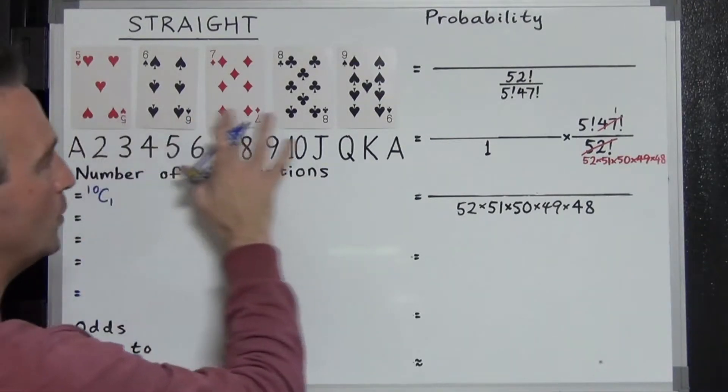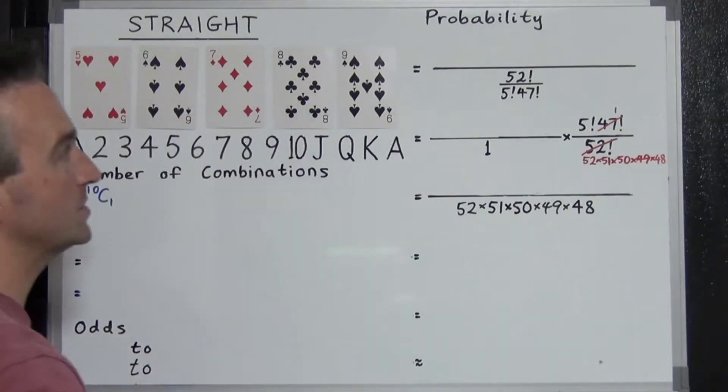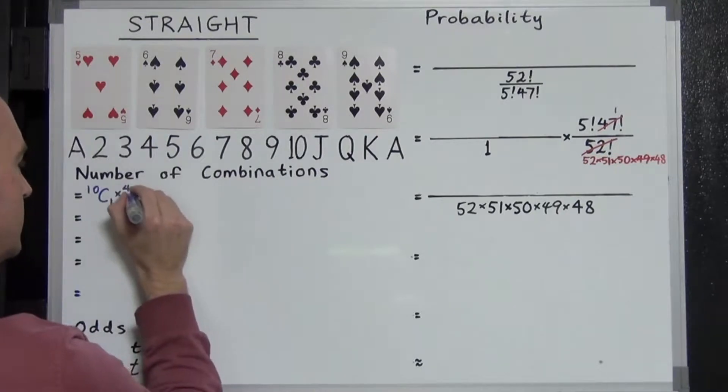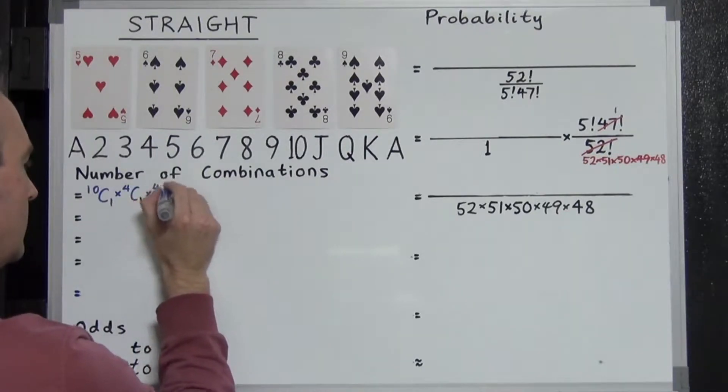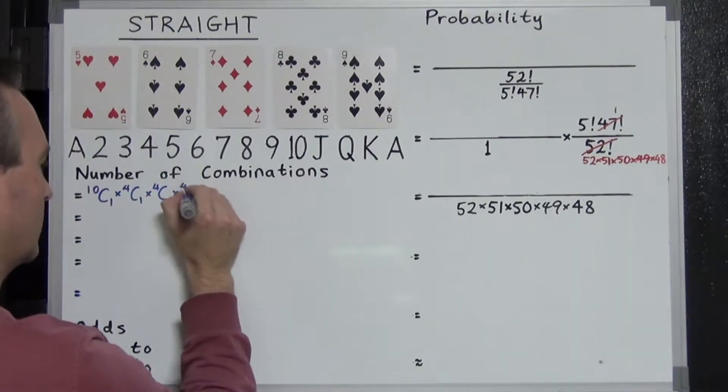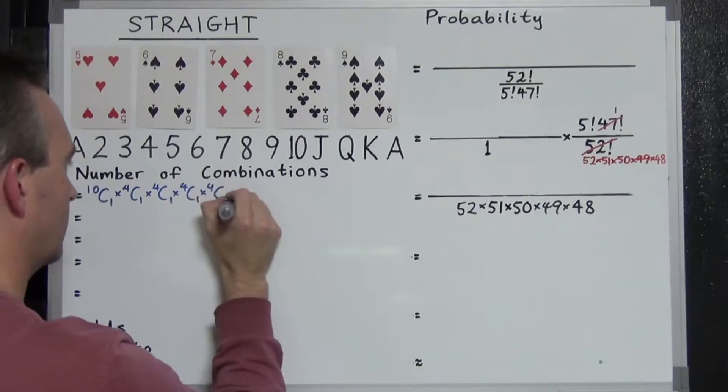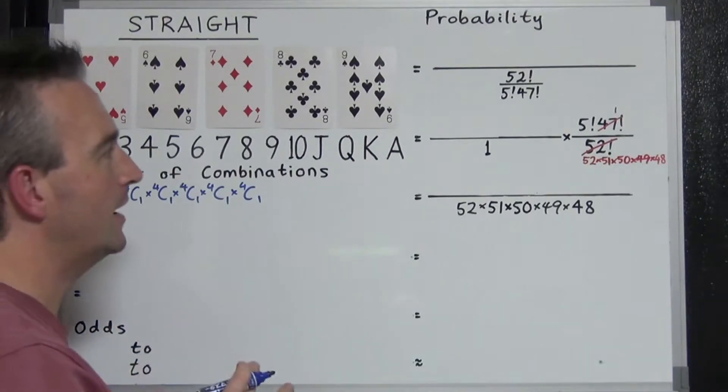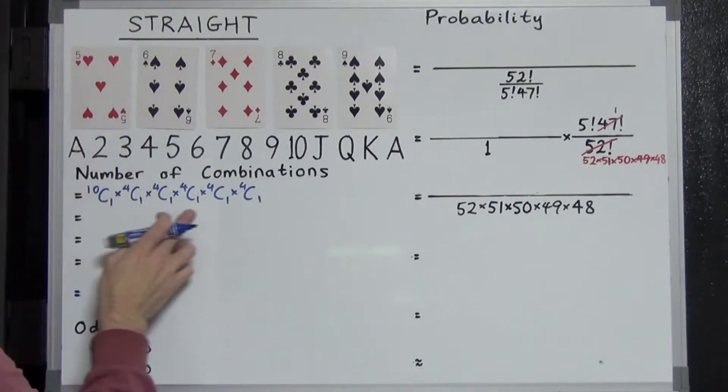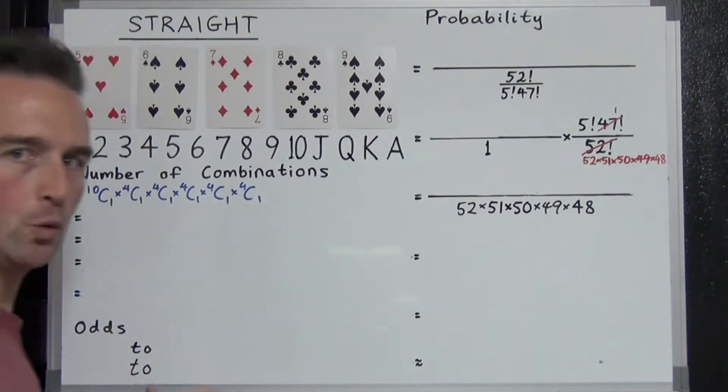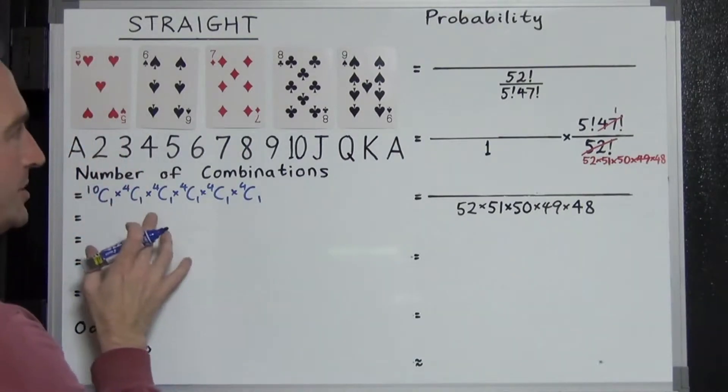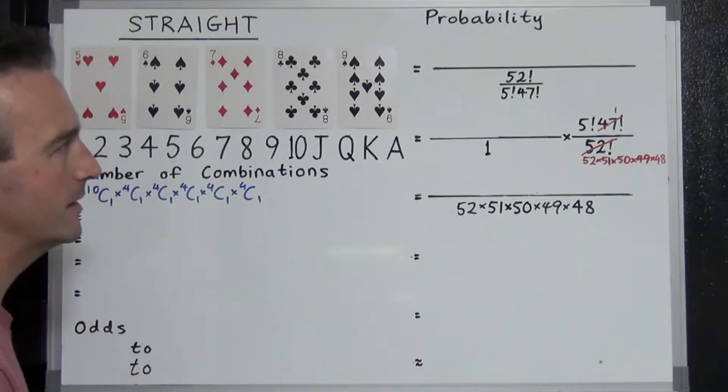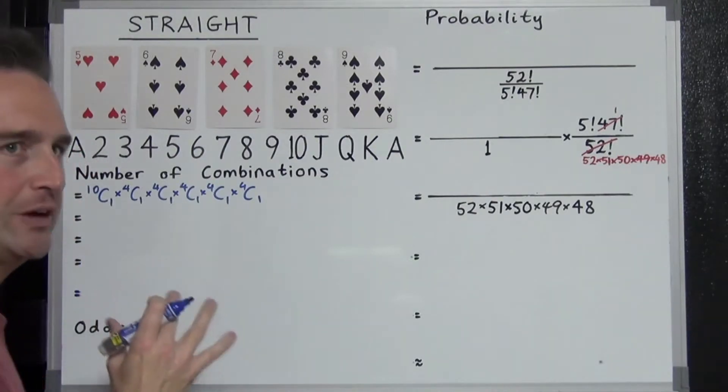And then we also have to worry about the suits. Each card has four possible suits. So we need 4C1 five times. And what makes this one kind of hard is that what we have here is not finished. This also includes straight flushes and royal flushes. We have to actually deduct them from this to get the number of possible simple straight hands.